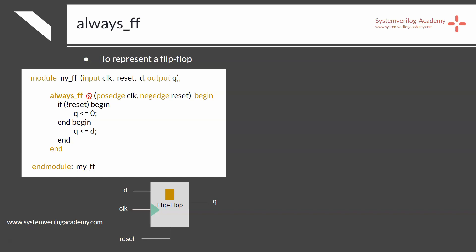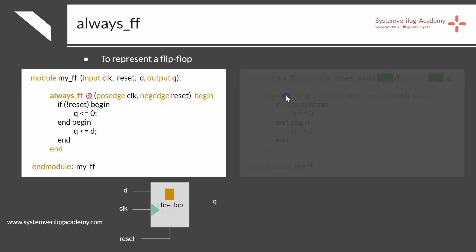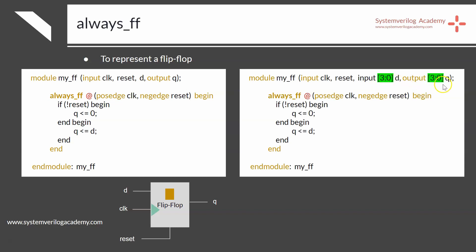In the same code, if you increase the width of the input and output variables d and q to 4 bits — [3:0] d and [3:0] q — it will generate a 4-bit storage element in the circuit. This can be extended to any number of bits according to the functional requirement.